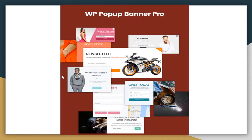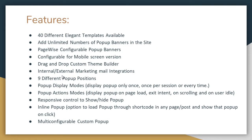With WordPress Pop-up Banner Pro plugin, you will be getting a wide variety of features. This plugin has 40 different elegant templates. You can add an unlimited number of pop-up banners on the site. There is page-wise configurable pop-up banners, configurable for mobile screen versions too, and a drag-and-drop custom theme builder.